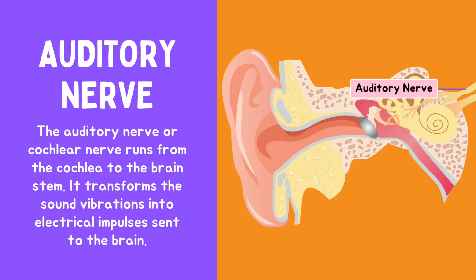The auditory nerve, or cochlear nerve, runs from the cochlea to the brain stem. It transforms the sound vibrations into electrical impulses sent to the brain.